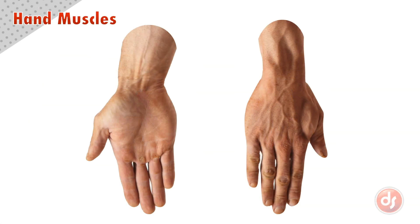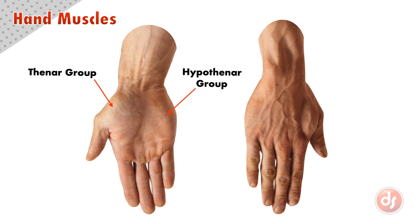There are three main muscle masses on the hand: the thenar group, the hypothenar group, and the first dorsal interosseous.